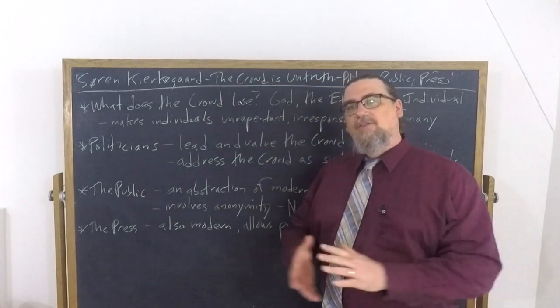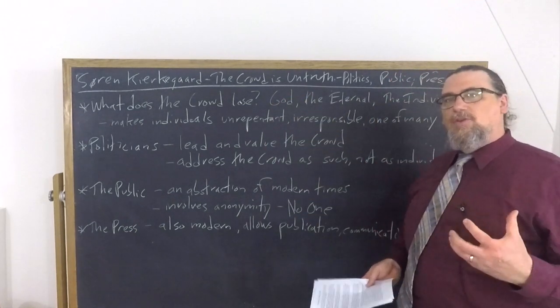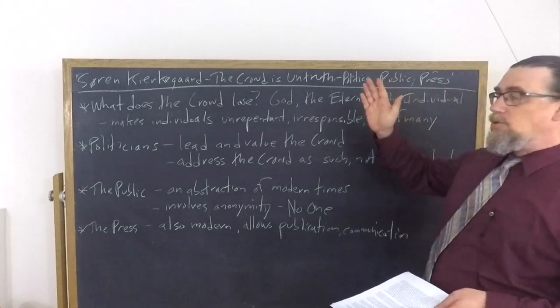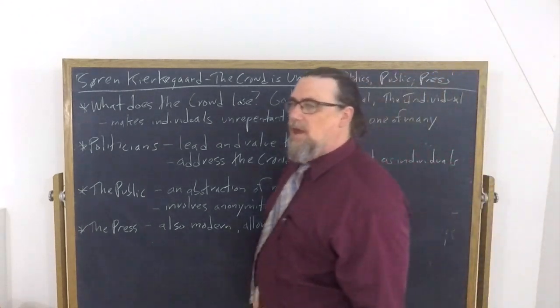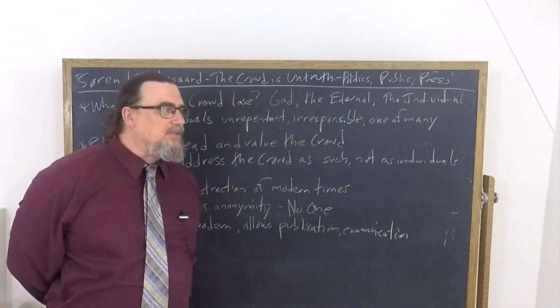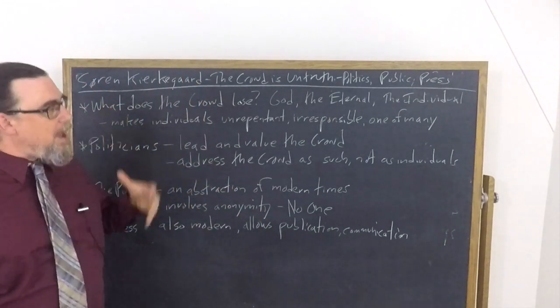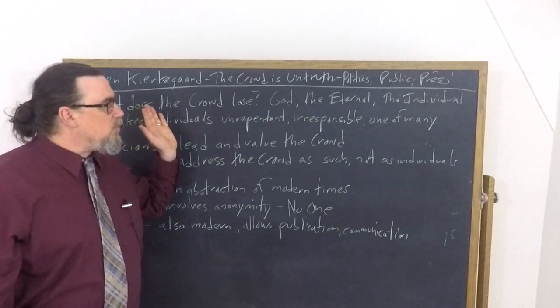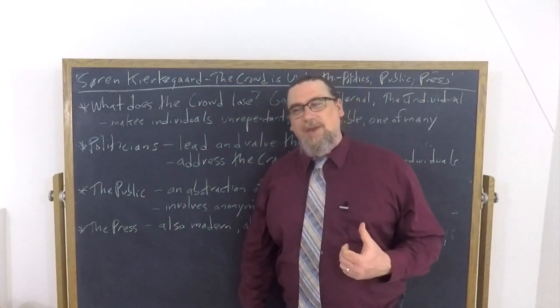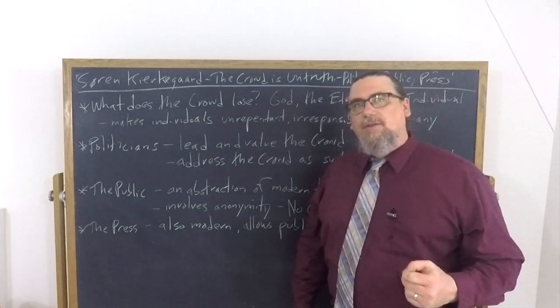Now, what are the domains that he's going to discuss and why is this such a problem? By appealing to the crowd, by making that the center, the value of one's existence, you lose touch with God, the eternal, and you lose touch with yourself as what he calls the single individual. He tells us that what ends up happening through this dynamic is that it makes individuals unrepentant. They don't think that they're doing anything wrong when they do something wrong. When they say they've got something that is right, but they're actually doing the wrong thing, they're in error and they won't admit it.